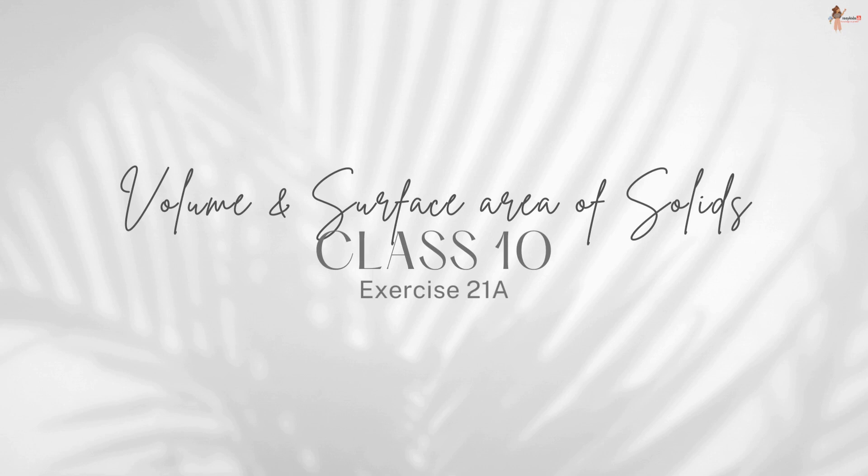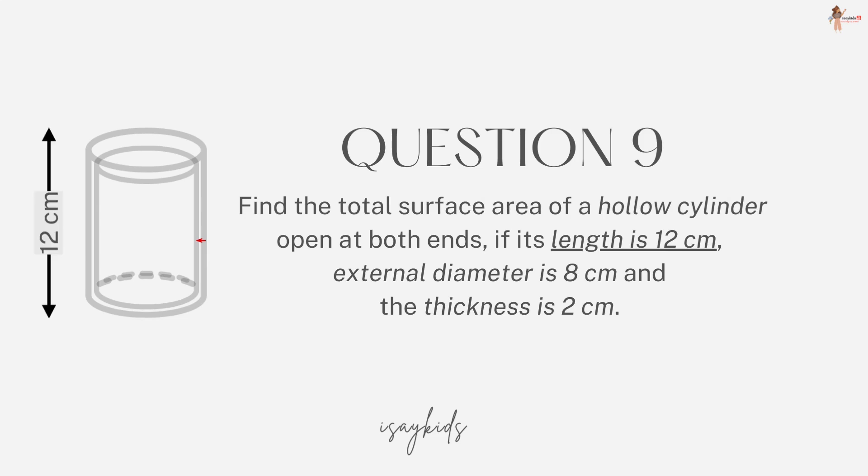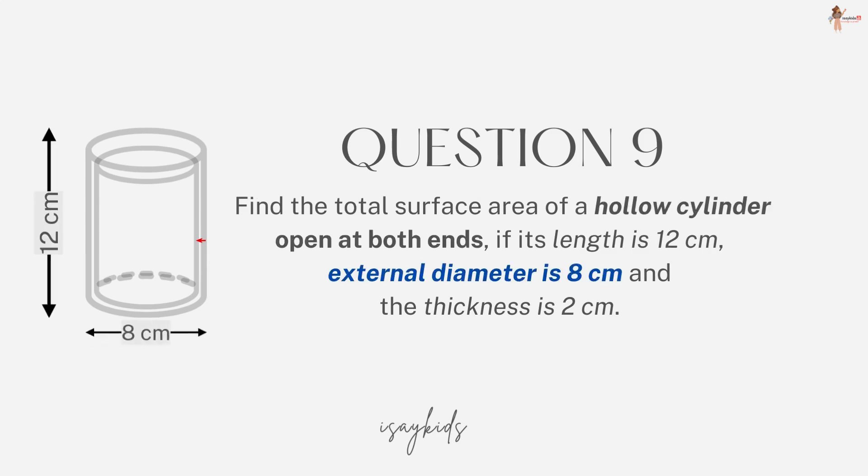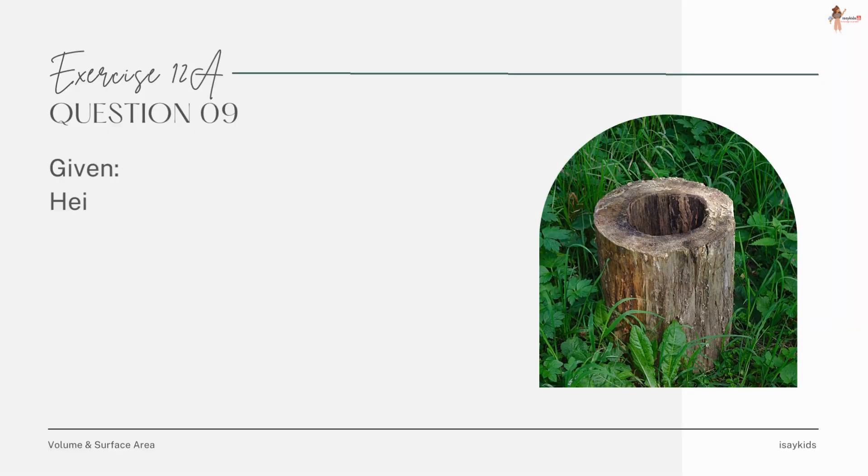Hi, let's begin. The question is: Find the total surface area of a hollow cylinder open at both ends if its length is 12 centimeters, external diameter is 8 centimeters, and thickness is 2 centimeters.